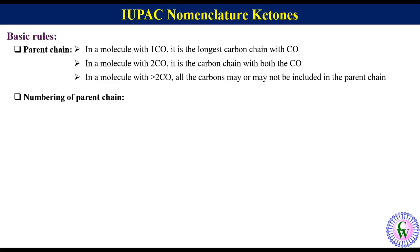The second rule is regarding numbering of the parent chain. Numbering is done in such a way that gives the lowest possible number to the ketonic carbon.